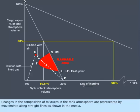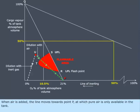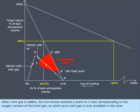Changes in the composition of mixtures in the tank atmosphere are represented by movements along straight lines as shown in the media. When air is added, the line moves towards point P, at which pure air is only available in the tank. When inert gas is added, the line moves towards a point on the x-axis corresponding to the oxygen content of the inert gas, at which pure inert gas is only available in the tank.